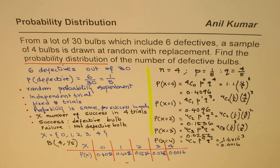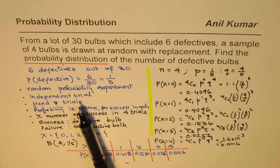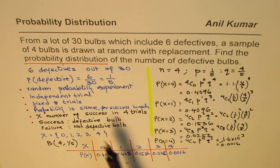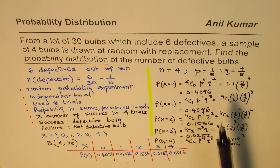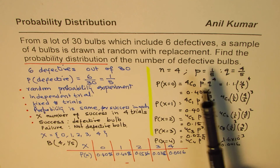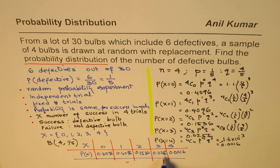You understand the process: we know there are four trials; probability of success — finding a defective piece — in each trial is 1 out of 5; and failure, having a good piece, is 4 over 5. So the probability distribution for the defective pieces follows from p = 1/5.